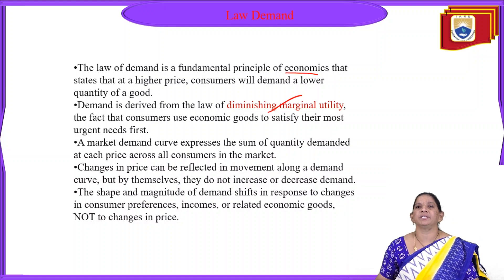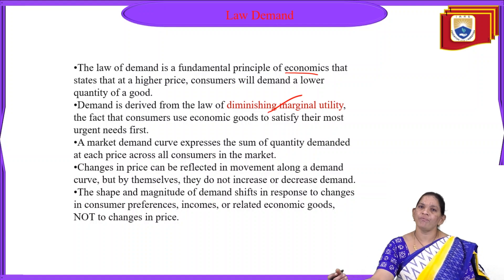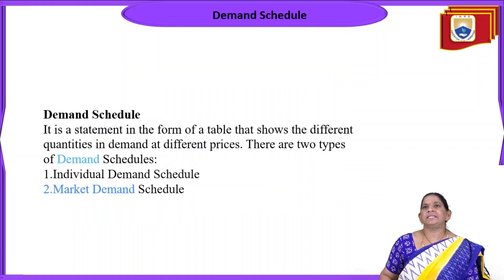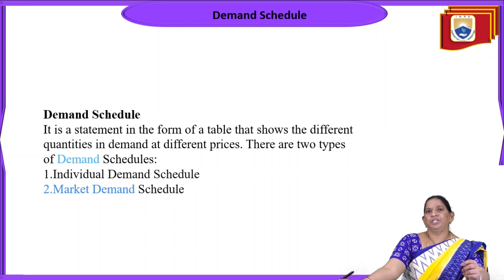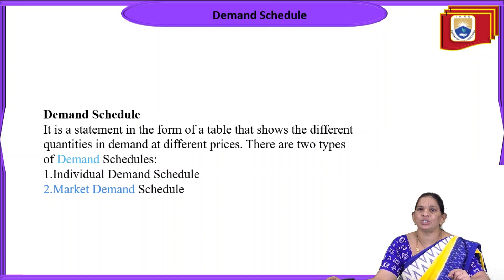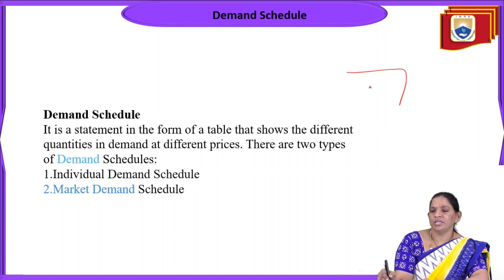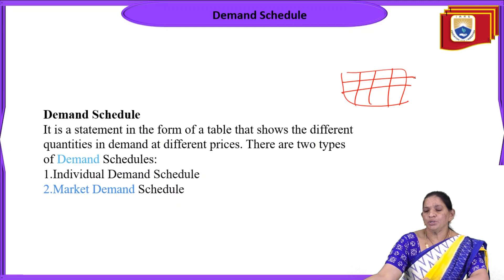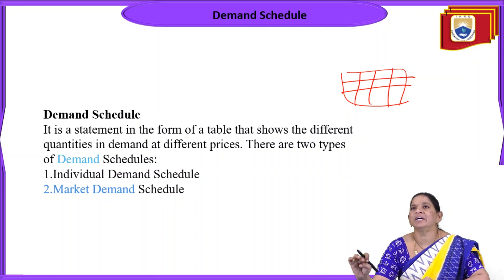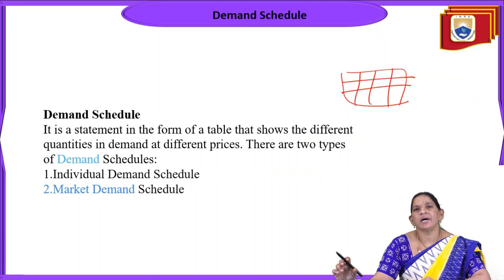When we go in depth with the law of demand, first we will see what is a demand schedule — for both individual and market demand. A demand schedule is a statement in the form of a table showing the different quantities demanded at different prices. It is a tabular form showing what quantities of a certain product are purchased at a certain price.